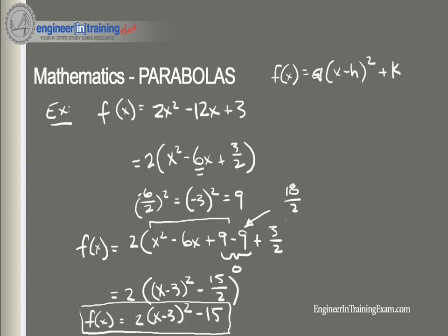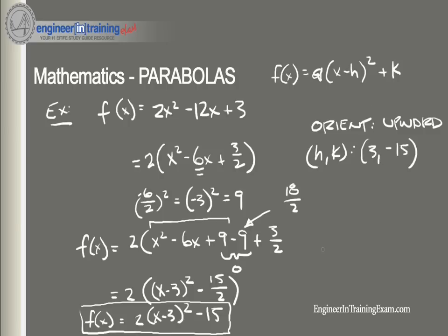We took our not-so-friendly form and converted it into our friendly vertex form. Now we can quickly determine key properties: the orientation — since a = 2 (positive), the parabola opens upward. We can also quickly identify the vertex (h, k) = (3, −15). Just like that, completing the square converted the standard form into the vertex form of a parabola.